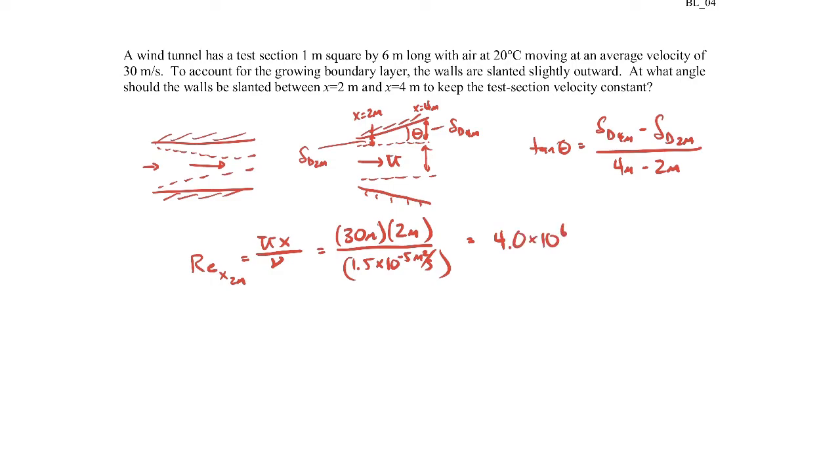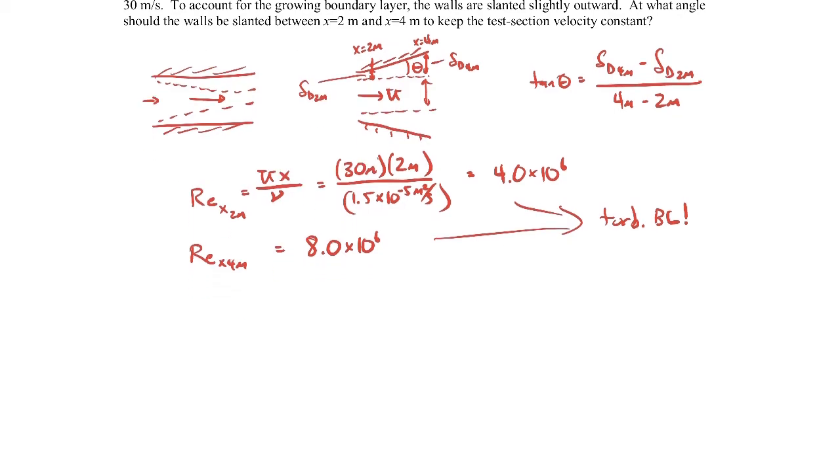So it's clearly turbulent. And then if you do the Reynolds number at 4 meters, you plug in those numbers, it'll come out to be 8 million. So both of these clearly are turbulent. So we'll want to use the displacement thickness expression for a turbulent boundary layer.